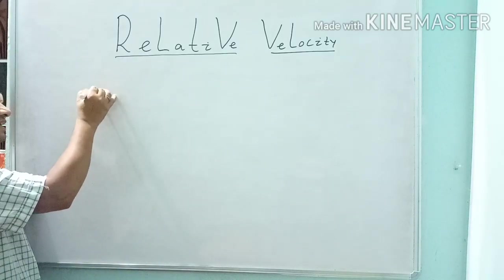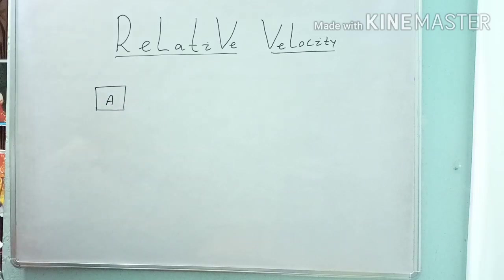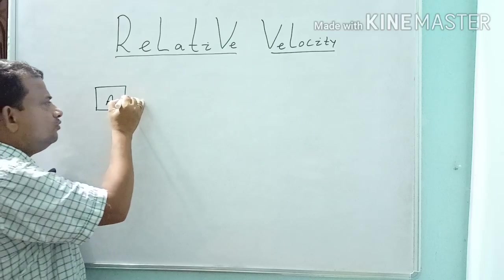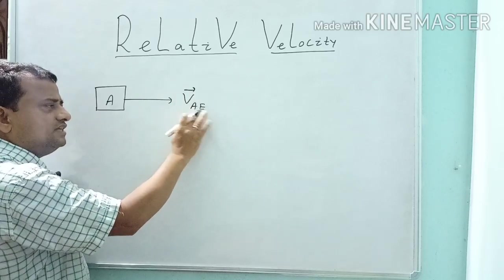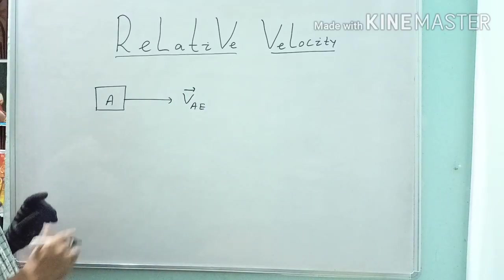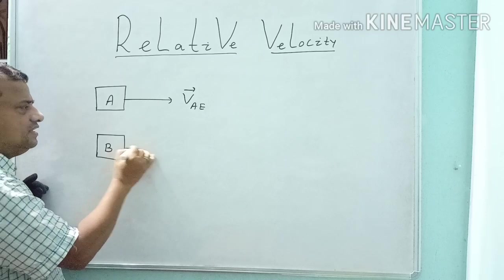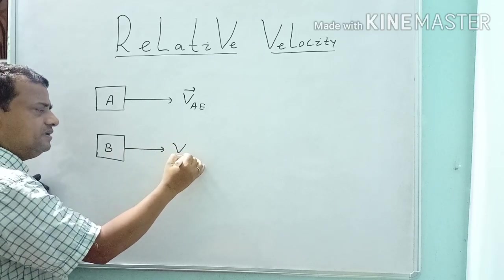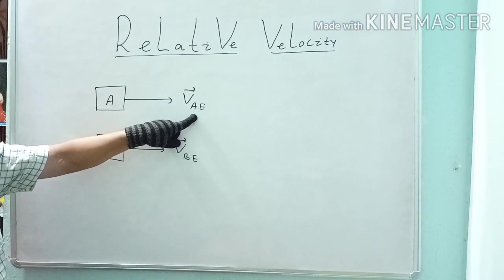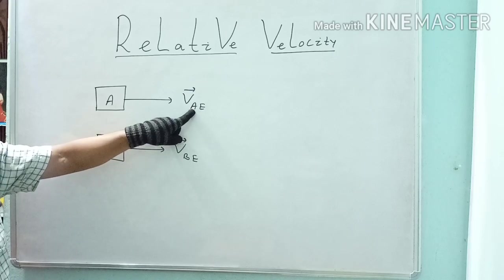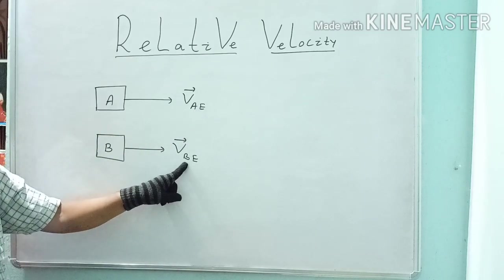Suppose I take object A, and this object moves with a speed VAE. Similarly, consider another object B, that also moves with VBE. Students, what are these? These are the subscripts — A, E means object A, E for earth. Object B, E for earth.